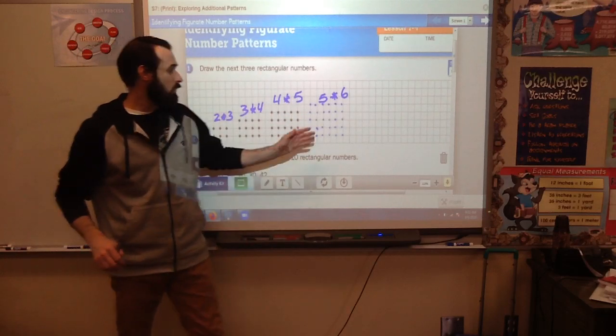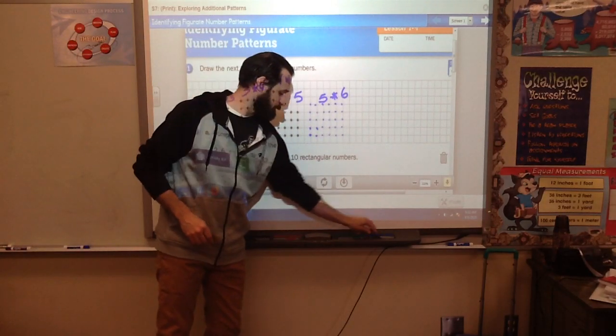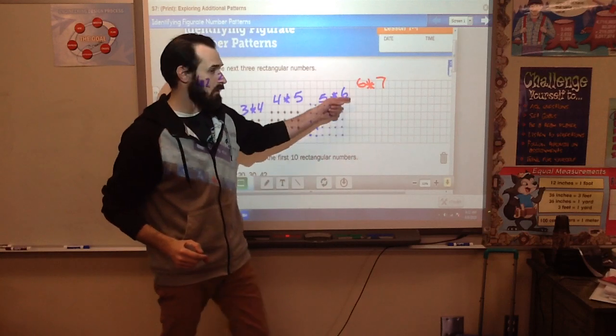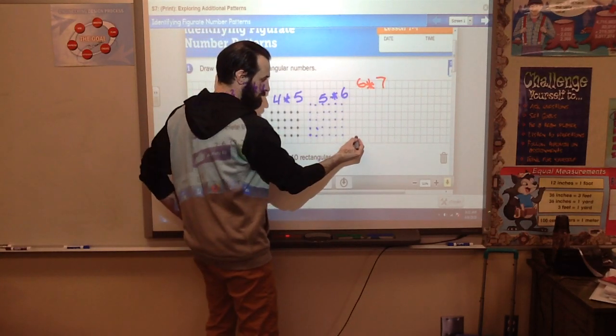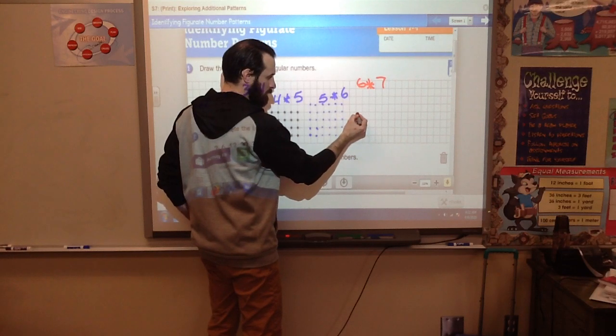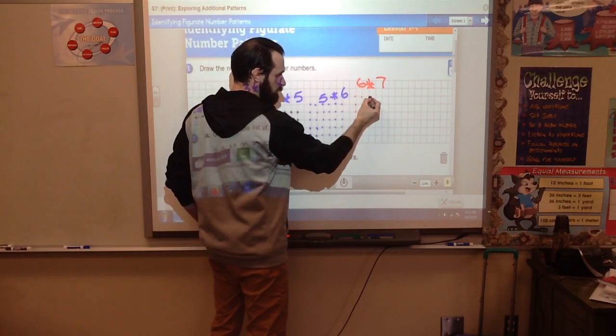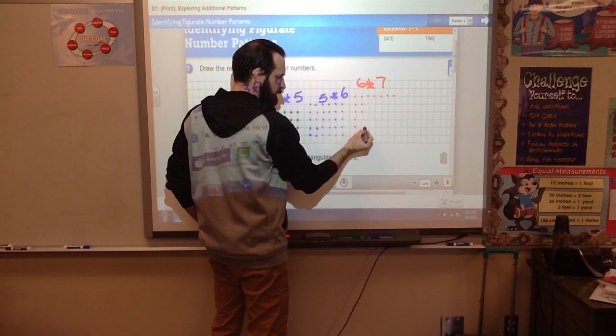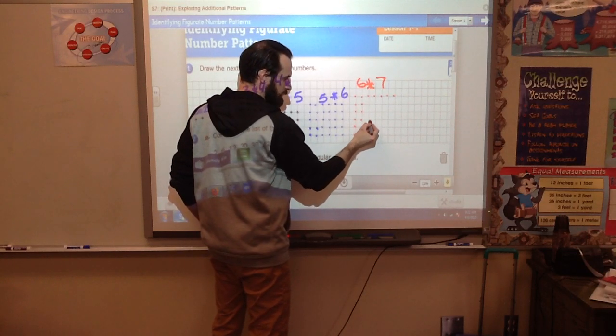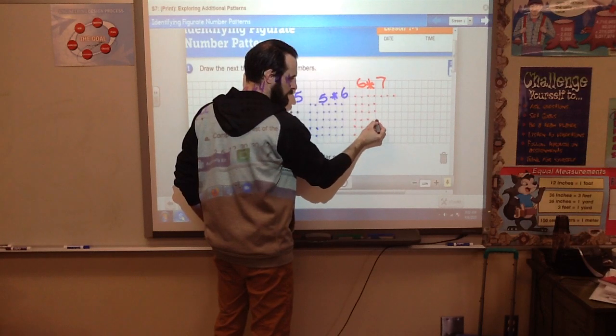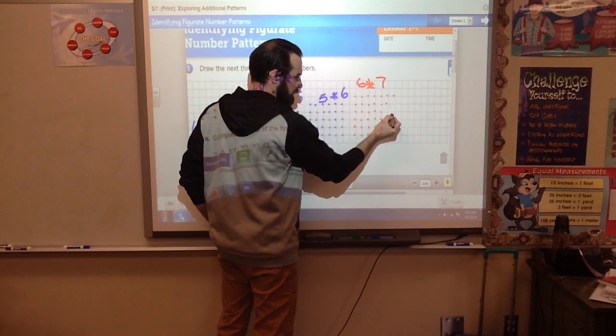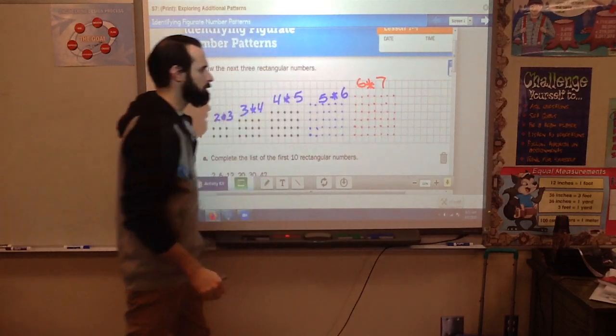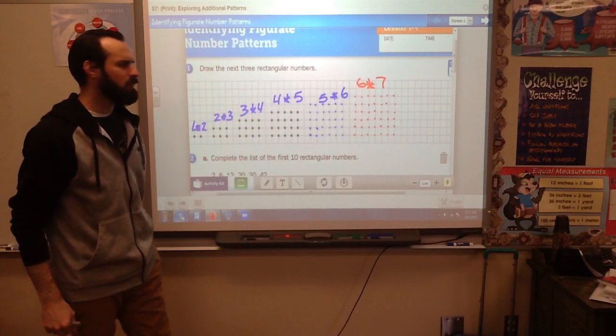Not so bad. If this is 5 by 6, what would the next one be? Of course that would be 6 by 7, so it's going to be six tall and seven long. Go ahead and make that one.